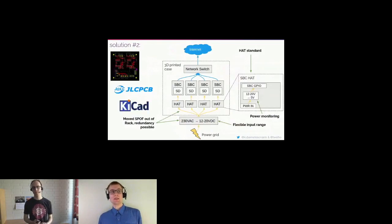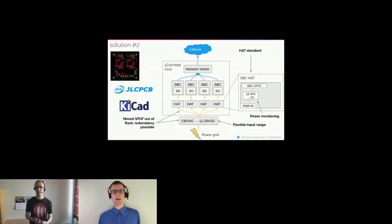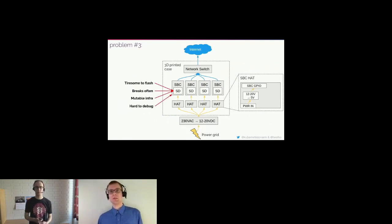To achieve a more robust solution, we can utilize the Raspberry Pi HAT standard — Hardware Attached on Top — essentially a PCB that goes on top of each single board computer. Using this, we can power the Raspberry Pis and other single board computers in a standardized way via the GPIO header. This standardized HAT form factor also allows for monitoring voltage and current of each single board computer separately, eliminating the single point of failure.